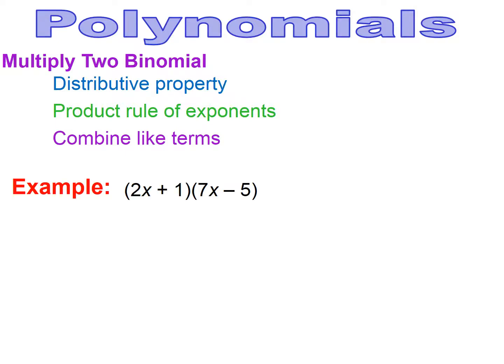Here's an example. I have two binomials that I'm multiplying together. I want to multiply the first term to the first term in the second binomial. I have it grayed out here because you're going to be doing this mentally versus writing everything out. You want to make sure that you have 2x times 7x — multiply the numbers together and add the exponents.